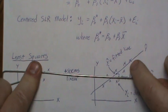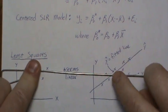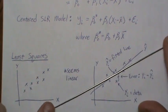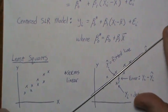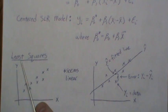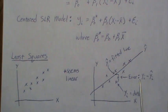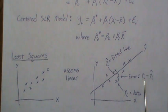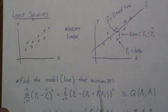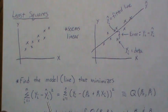If we fit a line that's clearly off, the error terms will be large for some points. We search for the line that minimizes the total squared error — that's the least squares line.